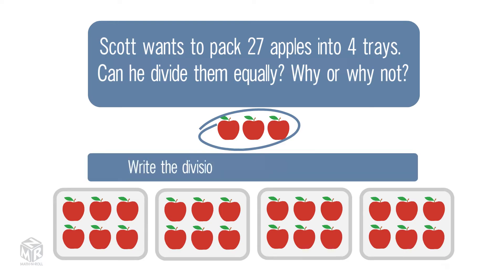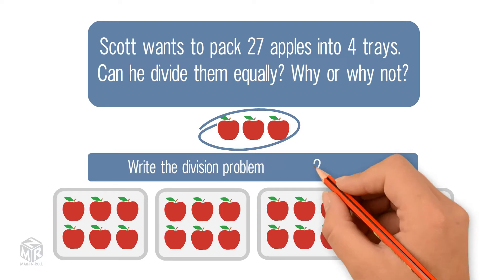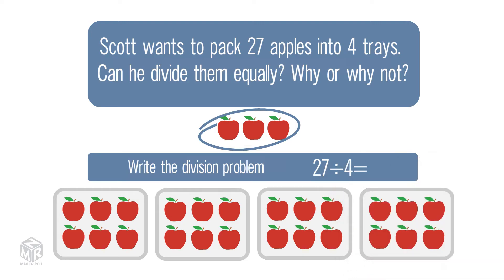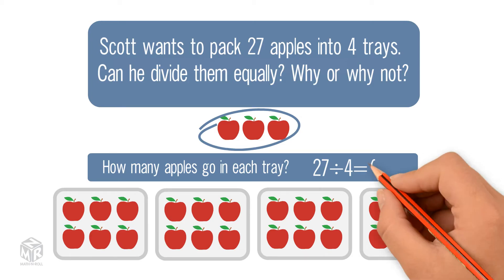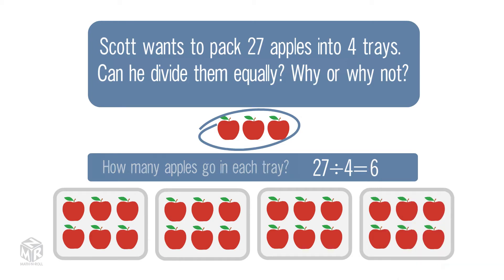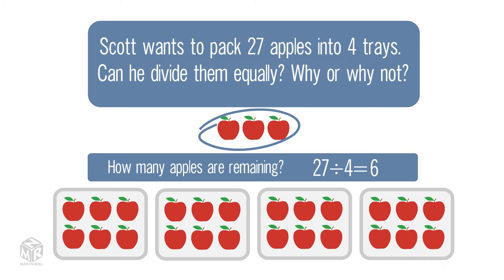Write the division problem: 27 divided by 4. How many apples go in each tray? 6. How many apples are remaining? 3 apples remain. So 27 divided by 4 equals 6 with a remainder of 3.